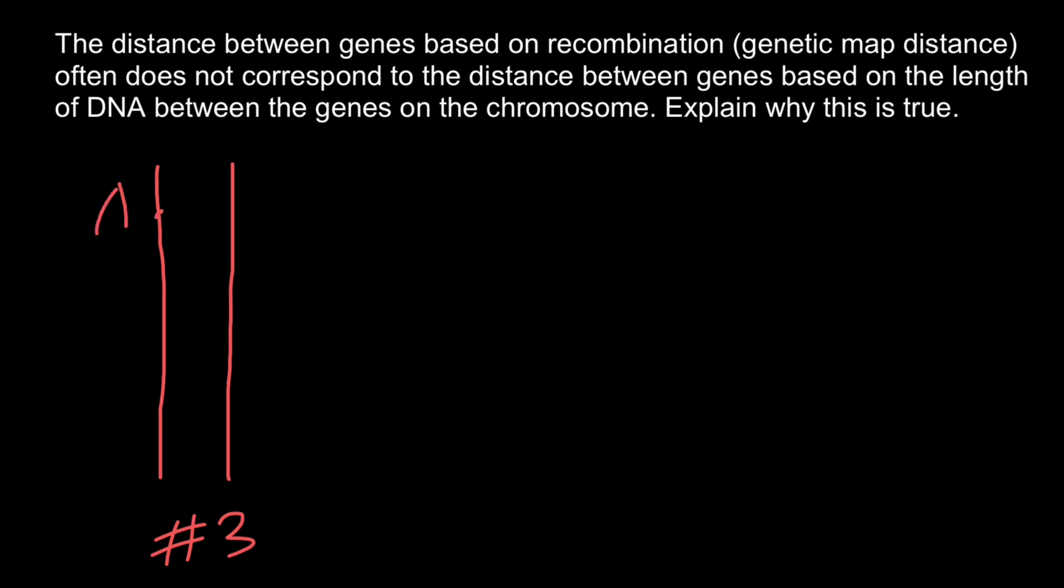Let's say we have here allele A, which is dominant, and here is recessive allele a. Here we have dominant allele B and here is recessive allele b. And here we have dominant allele C and here recessive allele c.